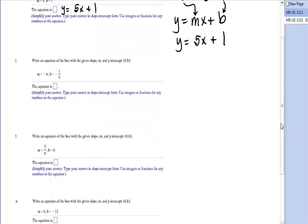Number two, you're given m is negative 6, and b, the y-intercept, is negative 1. Your answer in slope-intercept form is y equals negative 6x minus 1. That's all there is to it.